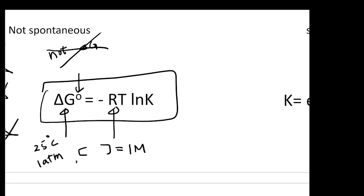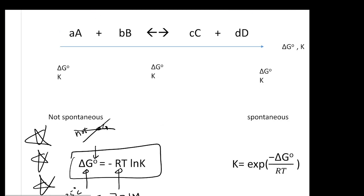Imagine you have a given reaction: aA + bB gives cC + dD. If you initiate a reaction, in the end it's going to reach equilibrium — equilibrium is always the final state of a reaction. In the beginning you dump in a lot of stuff, putting the reaction in a state very far away from equilibrium.